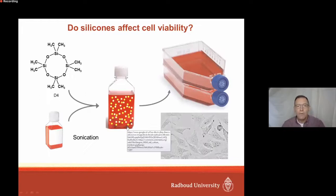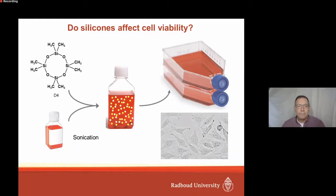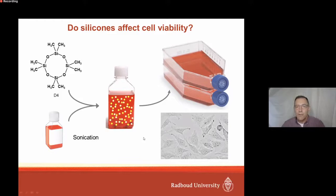We asked ourselves: what is the effect of silicones on human cells when cells are exposed to these silicone micro droplets? Until relatively recently, it was believed that silicones are inert and when cells are exposed to silicones, nothing will happen. We wanted to investigate this in a laboratory setting. What we did is we took D4 and the other low molecular weight silicones, generated micro droplets of these oily substances in the culture medium, and then added the culture medium to cultured cells. We asked ourselves what is the effect of this procedure on cell viability.